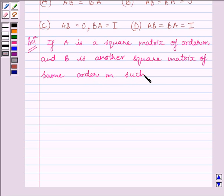such that AB equals BA equals I, where I is the identity matrix, then B is called inverse of A,